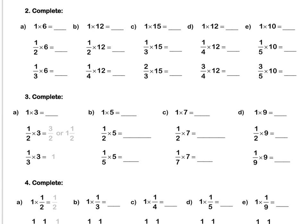Question 2. 1 times 6 is 6. Therefore, a half times 6 is a half of 6, which is 3. A third times 6 is a third of 6, which is 2, because 6 divided by 3 is 2.